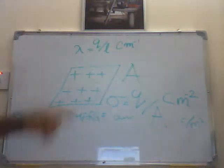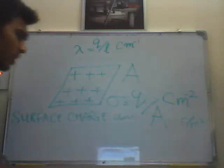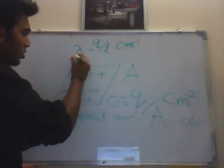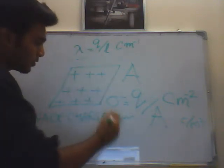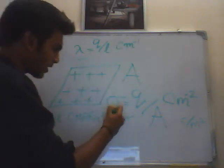So surface charge density is Q by A. It's fairly simple. We spoke about line of charge, which is linear charge density. Now we have a surface or plate, an area charge, and that is sigma.